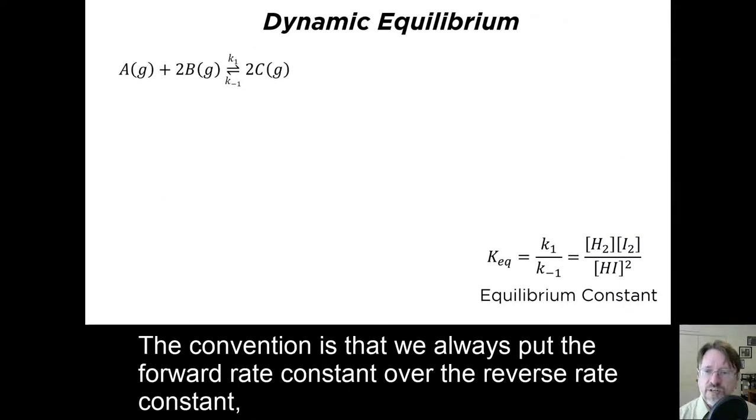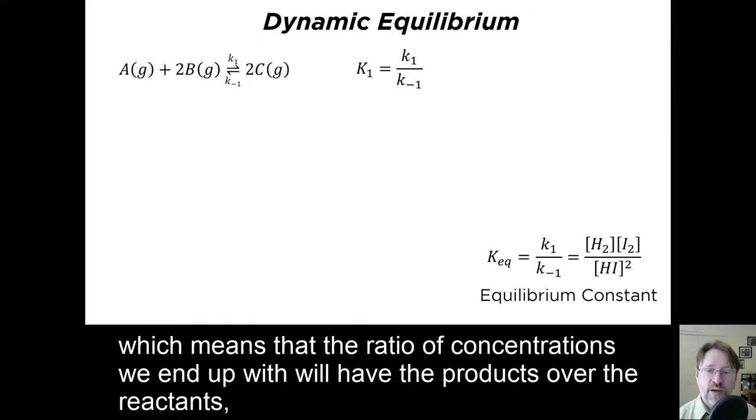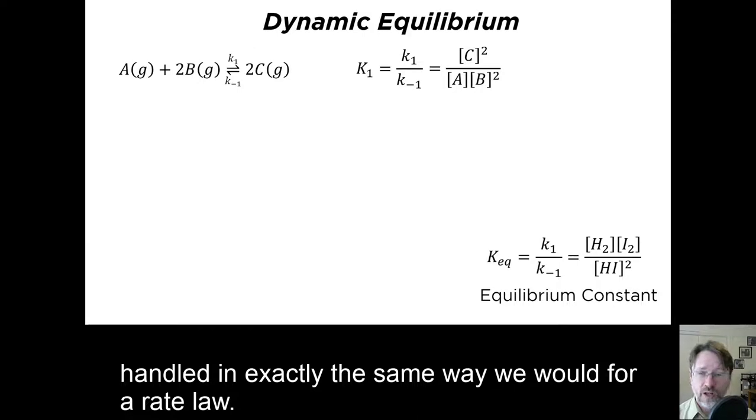The convention is that we always put the forward rate constant over the reverse rate constant, which means that the ratio of concentrations we end up with will have the products over the reactants, handled in exactly the same way we would for a rate law.